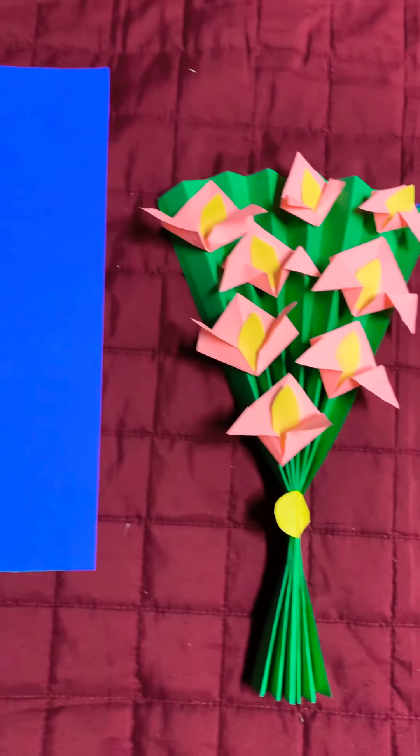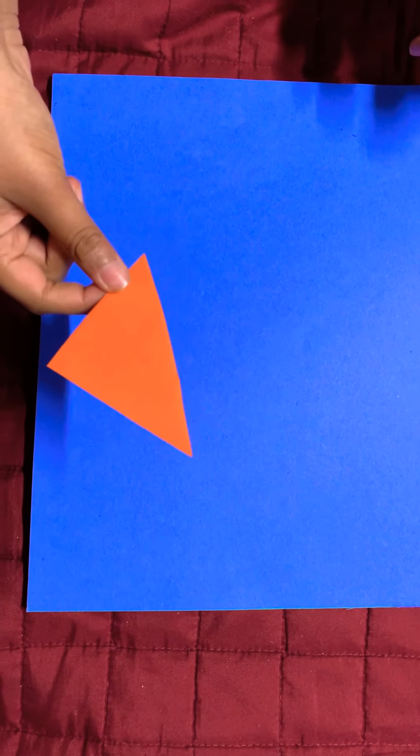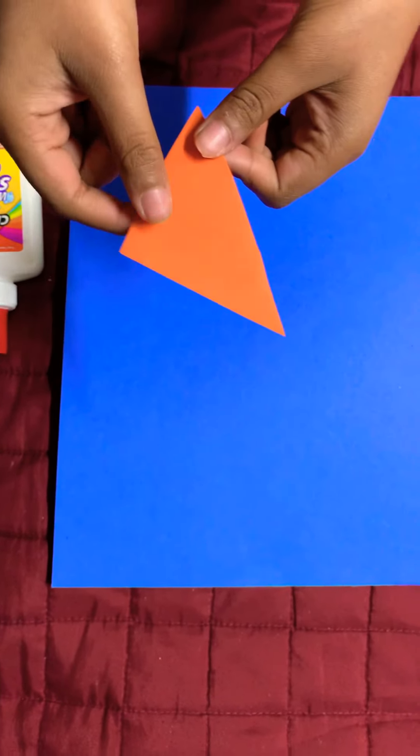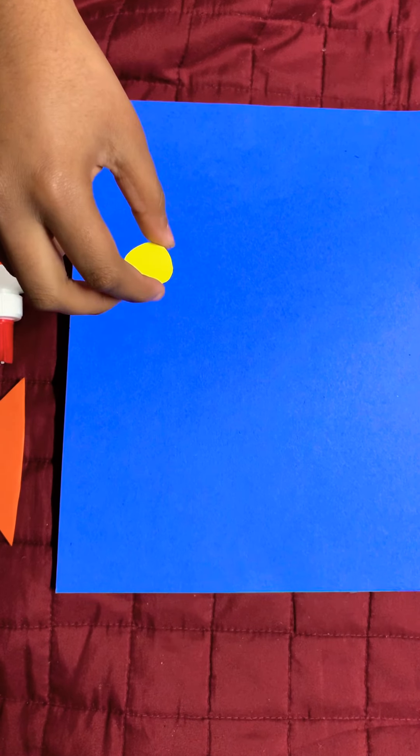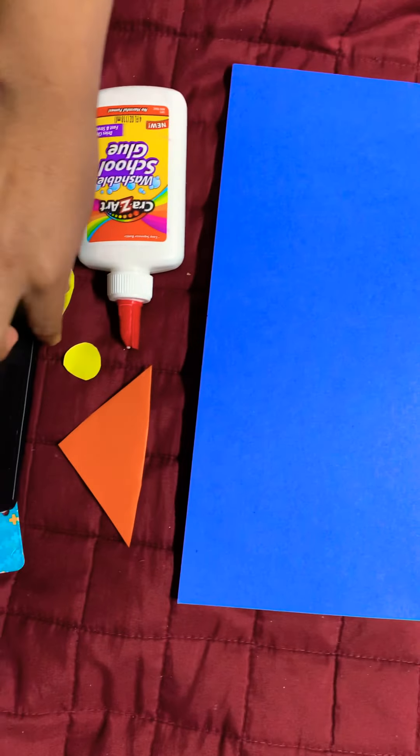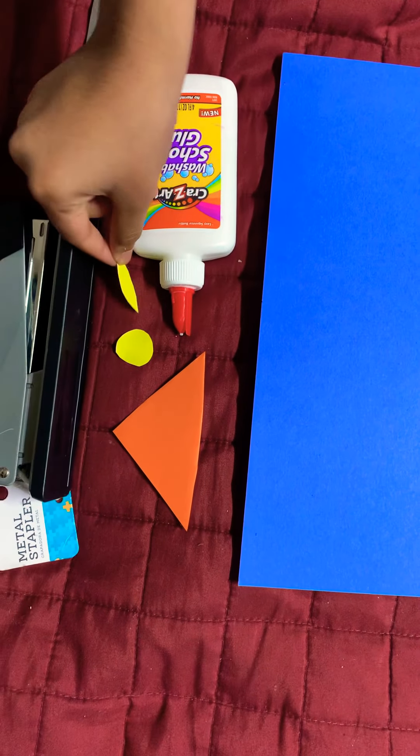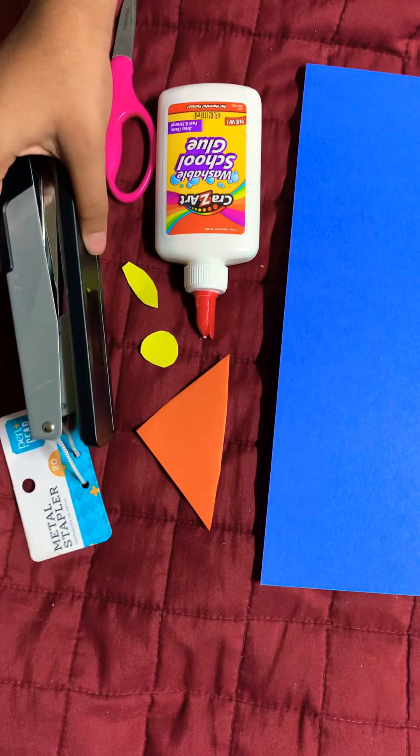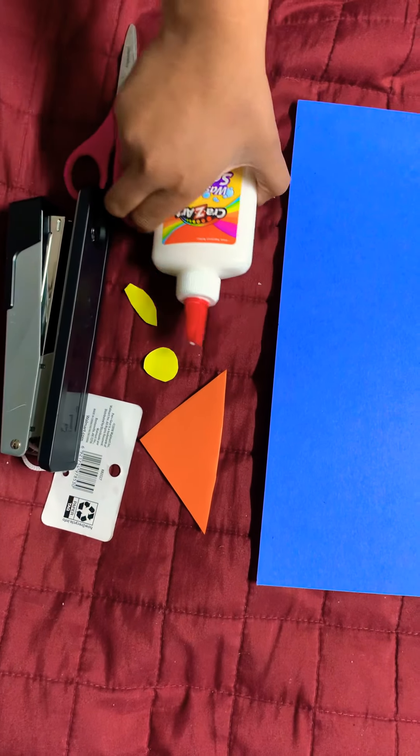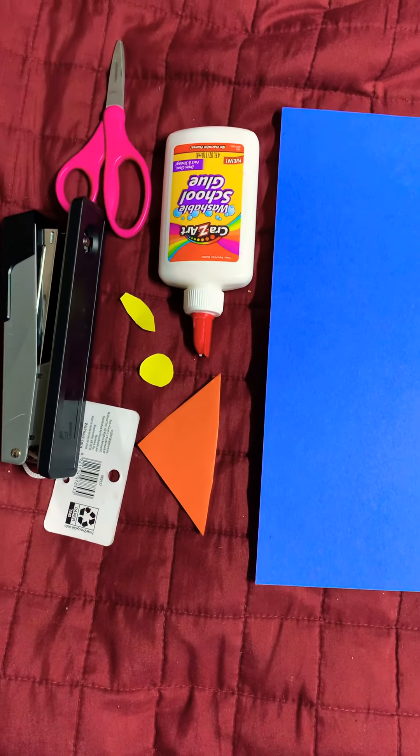First, to make this, you will need a piece of paper, A4 size, a small rectangle—you'll need eight of these, but I'm just showing you how to make one for now. You'll need a circle or a bow, you will need eight of these. And you will also need a stapler, some glue, and a scissor. So let's start.